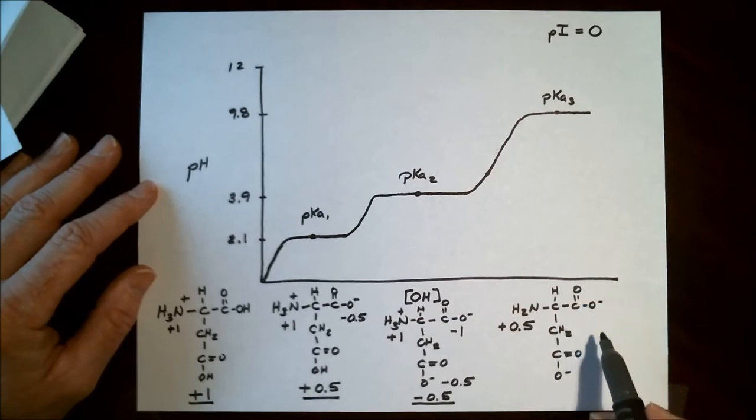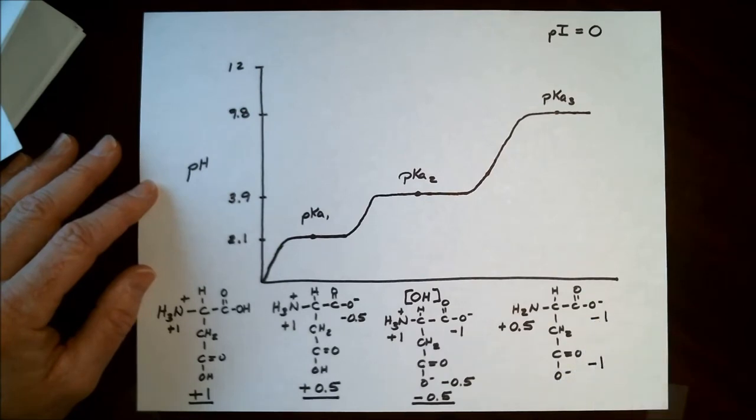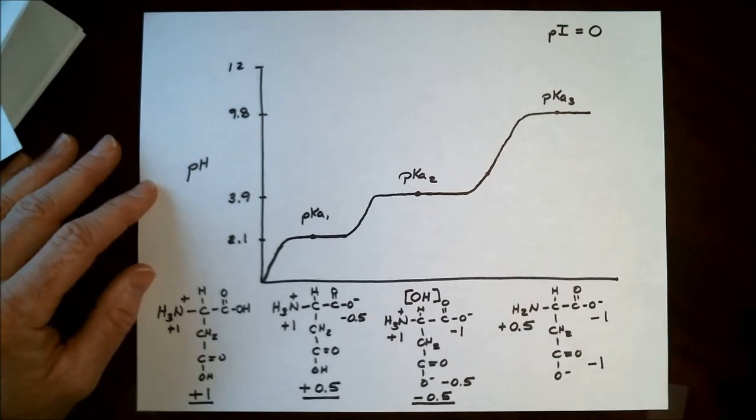The carboxylic acids, of course, both on the alpha chain and the R chain will be fully deprotonated, contributing charges of minus 1 each. So the overall charge on this particular molecule will be minus 1 plus minus 1 minus 2 plus 0.5. So we're looking at an overall charge of minus 1.5.